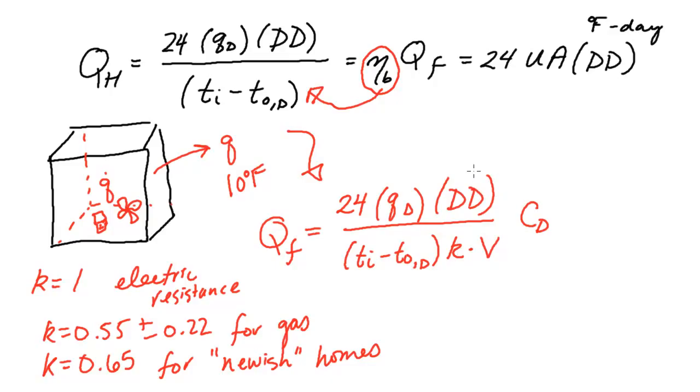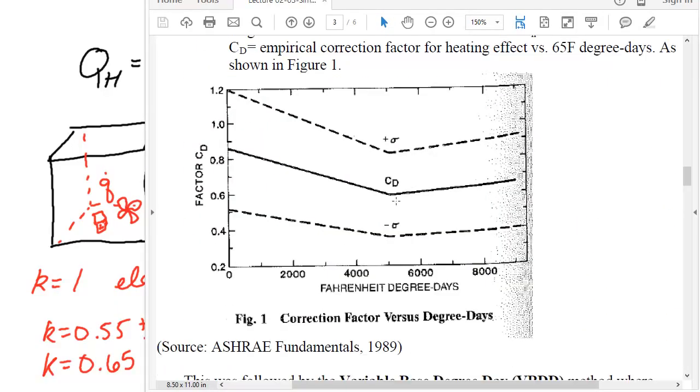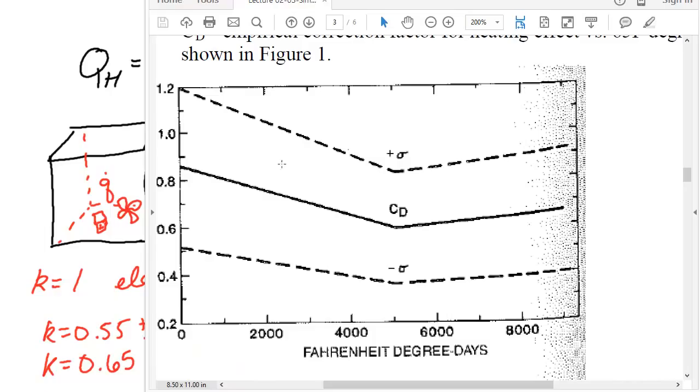What they also found is that this degree day was tending to over-predict fuel usage. And they came up with this chart, ASHRAE did, you can find it in ASHRAE fundamentals. Where based on the degree days that you calculated originally using base 65, that you could basically get out this coefficient here. Let me bring that plot over. And here we go. Here is a plot showing that correction factor. So you have some Fahrenheit degree days here as your x-axis, as your independent variable. And you can go up and you can find this CD factor.